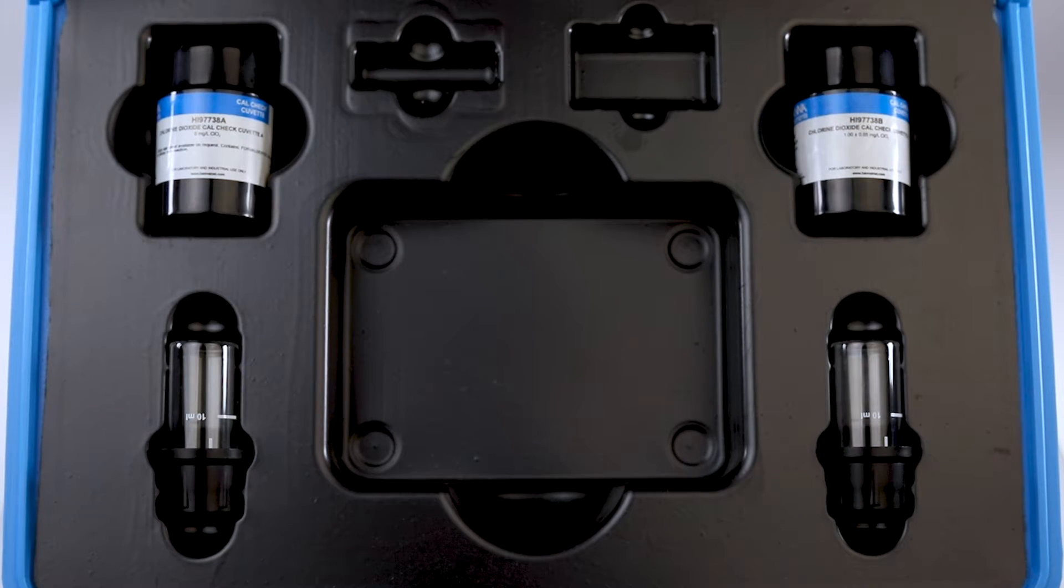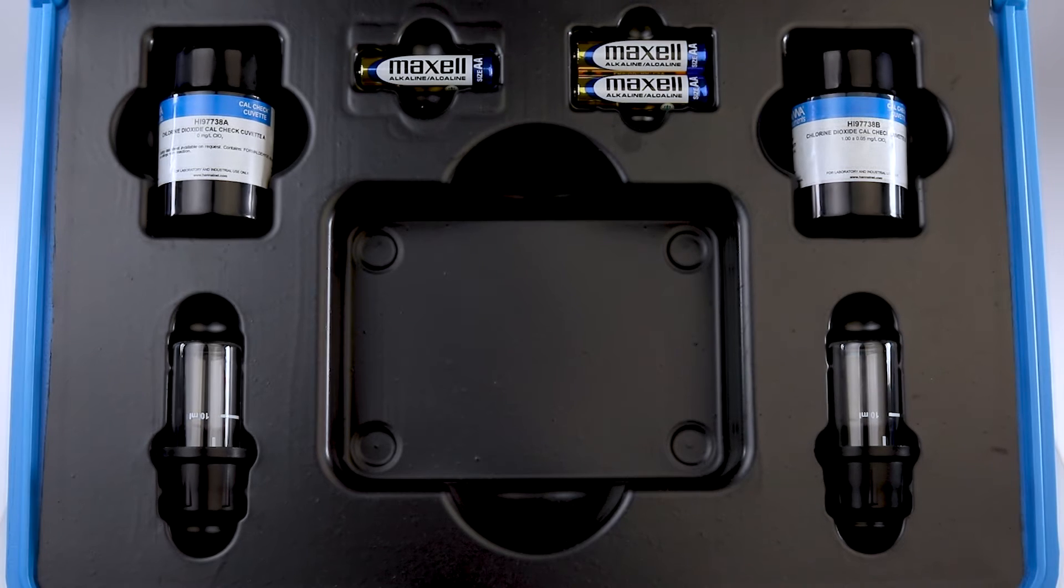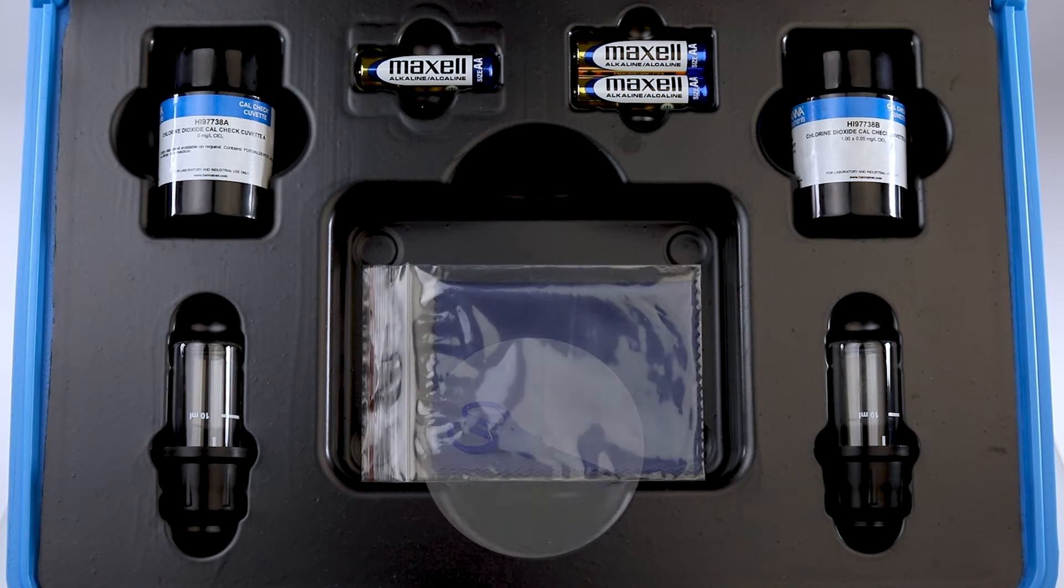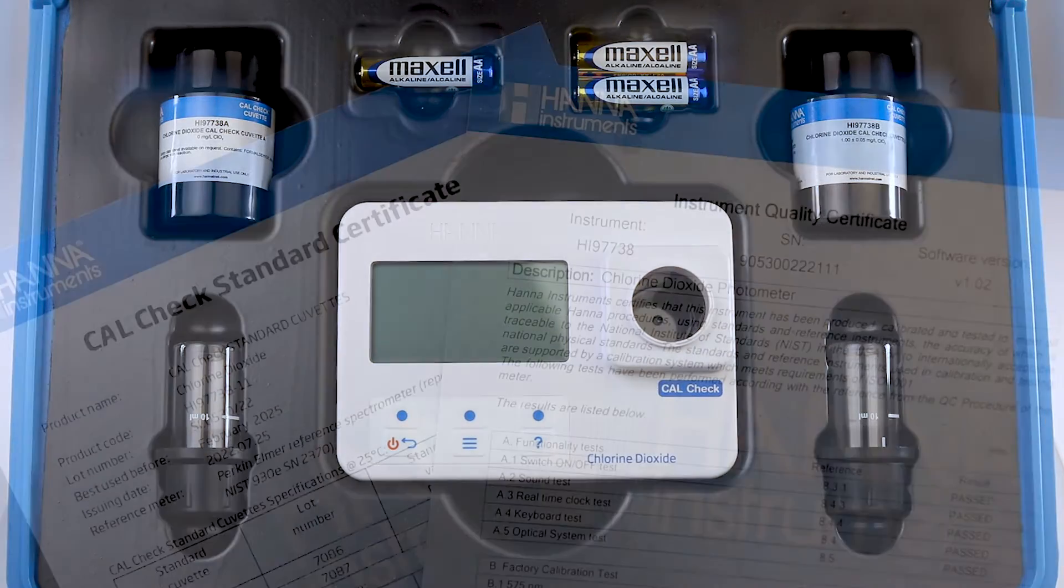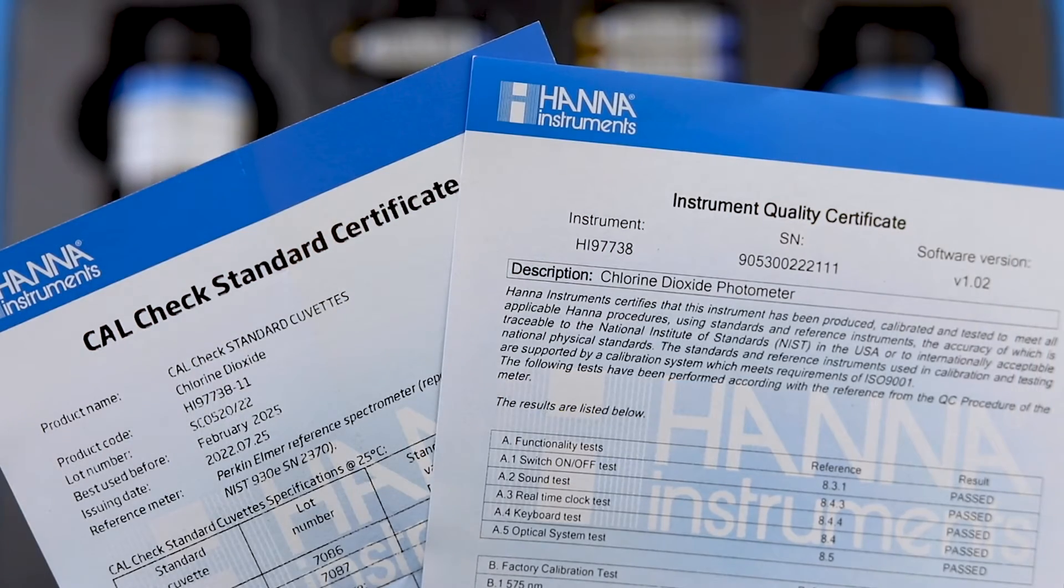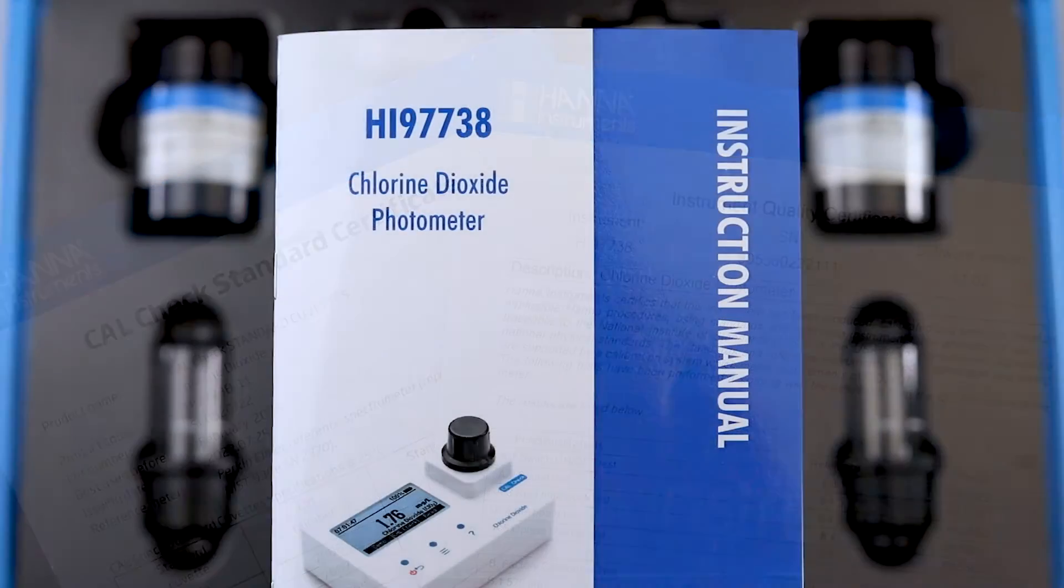The kit includes 2 sample cuvettes with caps, 3 1.5 volt AA batteries, a microfiber cloth, scissors, your HI-97738C photometer, CalCheck and instrument quality certificates, and your instruction manual.